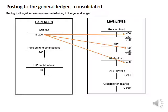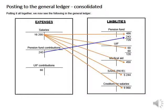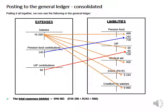So if we add up all the deductions, it gives us the same amount that we have debited in the salary account. And if we take the contributions and we add them up, it shows that our debits and our credits are equal. So the total expenses debits is $16,503 — that is the $16,200 in salaries plus the $243 in the pension fund and the $60 in the UIF contribution. And the total liabilities of these credits is also $16,503.